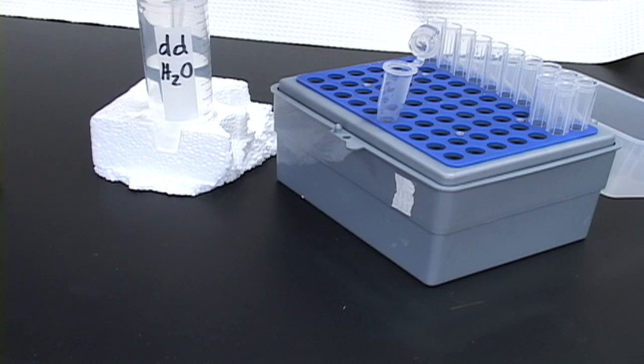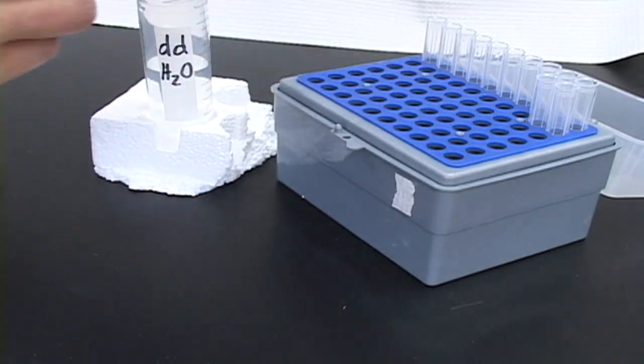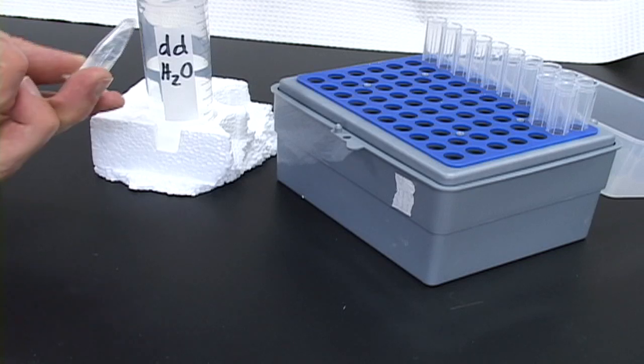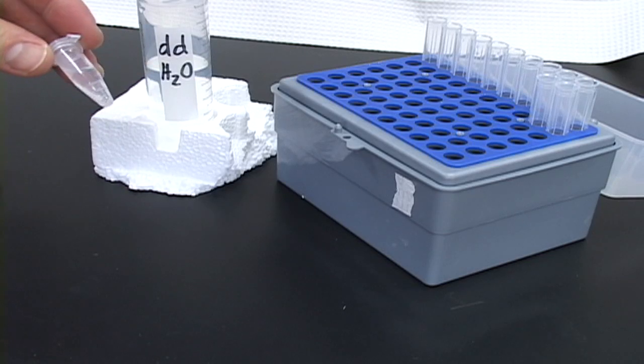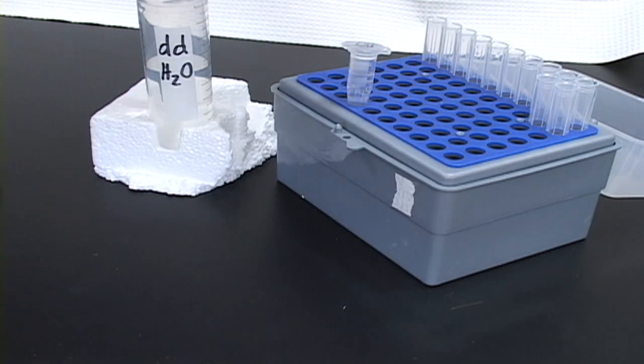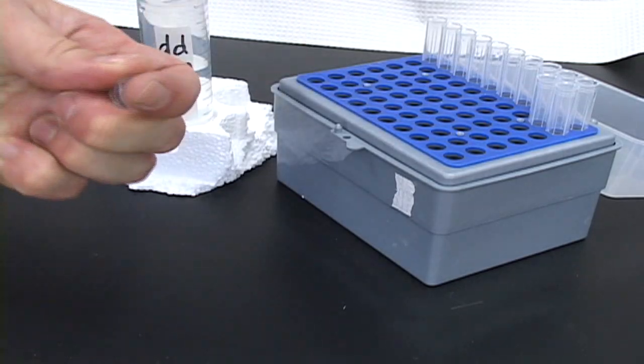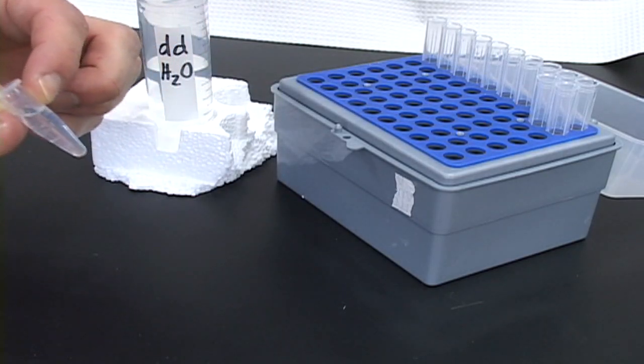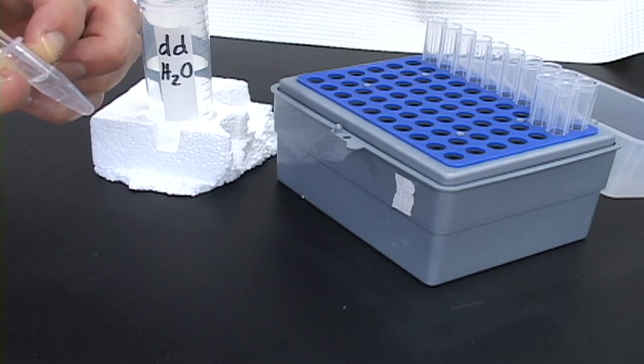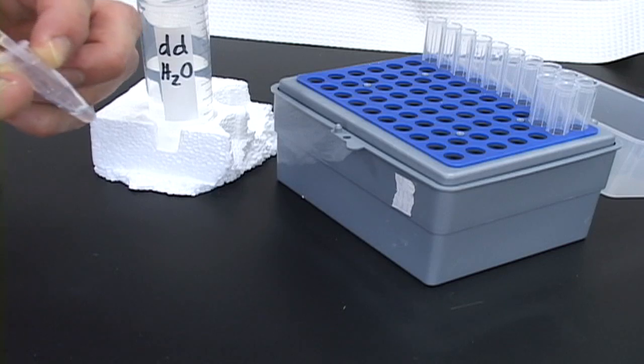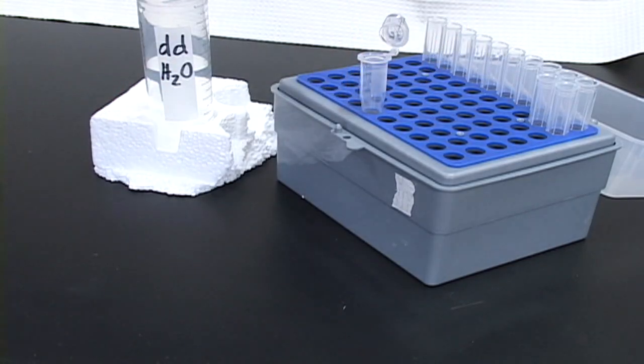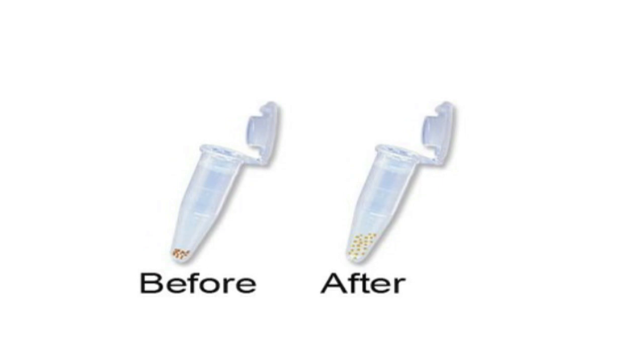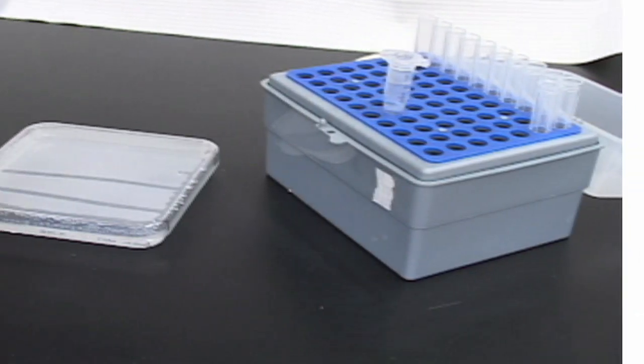Then, add 1 ml of water and invert once. After the seeds have settled in the tube, carefully draw off the water. You will notice that the seeds swell with each successive rinse, such that the volume that they take up in the tube increases. Watch the level of the seeds each time you remove the water and do not lower the tip past this point. Repeat the rinse three more times, leaving the fourth volume of water in the tube.